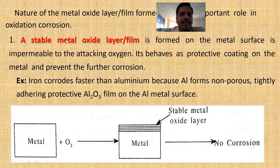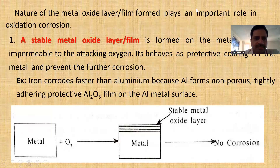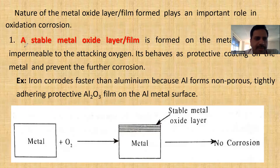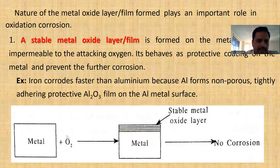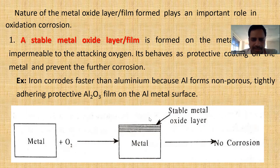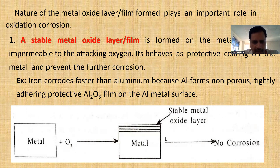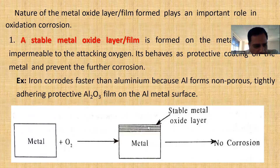First case: if the metal oxide formed is stable and non-porous, further oxygen cannot penetrate through this metal oxide — there is no corrosion. The stable metal oxide layer acts as a protective barrier. Second case: if the metal oxide is unstable, it will be converted back to metal and then re-exposed to oxygen. The fresh metal is exposed to oxygen again and again, and the metal oxide is repeatedly converted. In this case also, there is no net corrosion because the pure metal is regenerated.